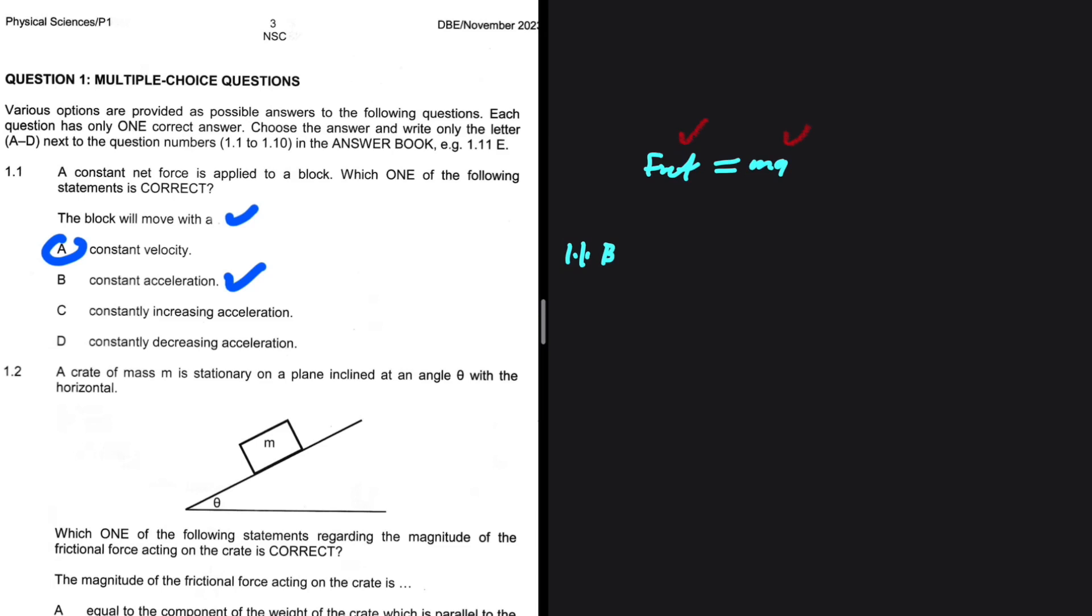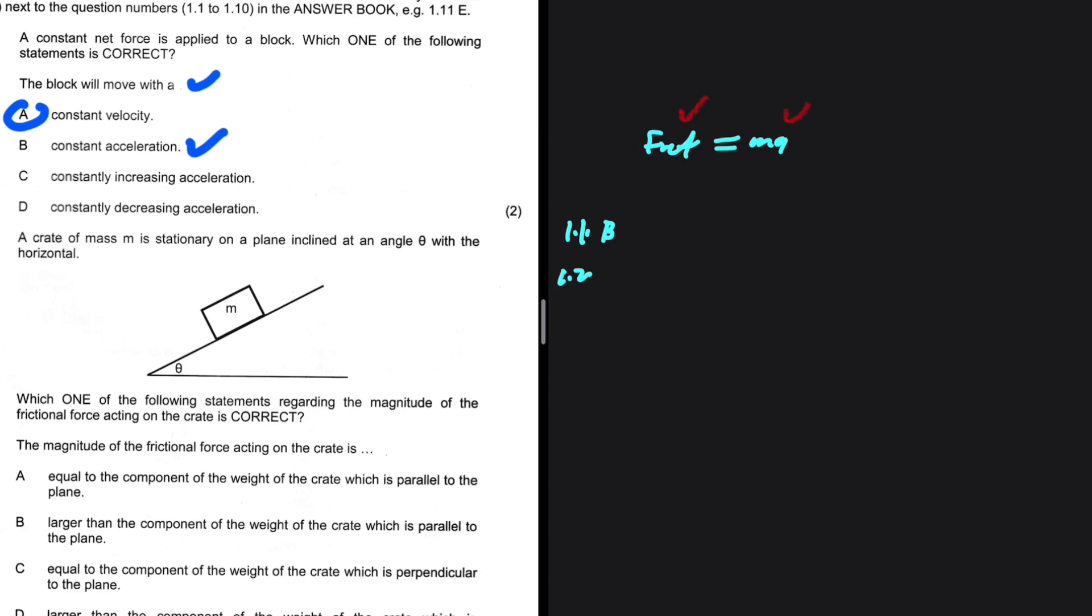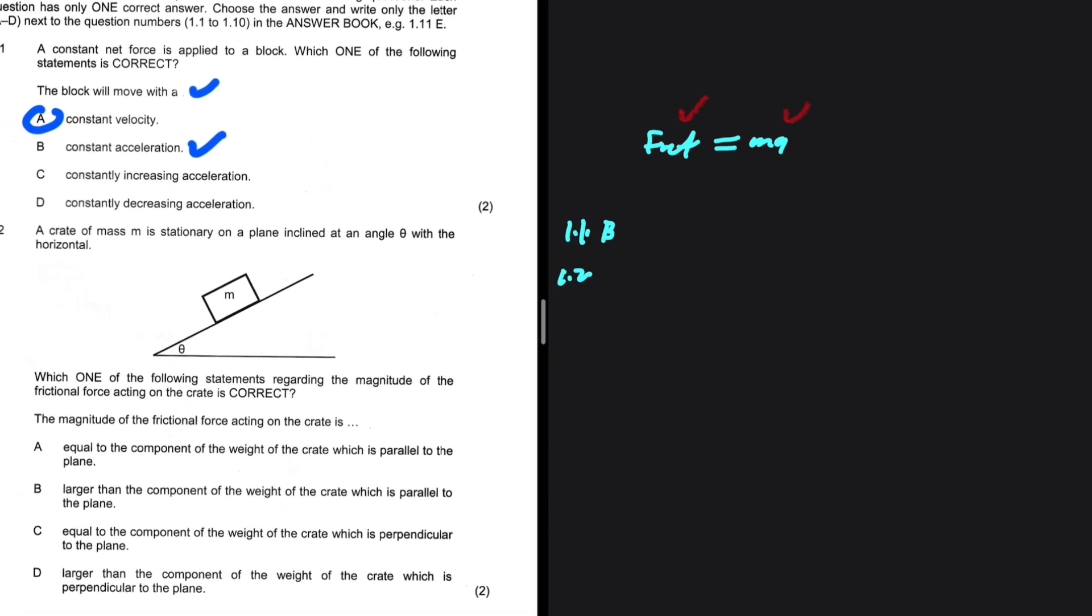1.2: A crate of mass m is stationary on a plane inclined at an angle theta with the horizontal. Which one of the following statements regarding the magnitude of the frictional force acting on the object is correct? The crate is stationary. If we draw a free body diagram for m, we're going to have fg parallel pushing down the object, but it is stationary. That means that frictional force is pushing it up the incline. We have the normal force and we have fg perpendicular. Clearly you can see that fg parallel is equal to the frictional force. That is why our object is stationary.